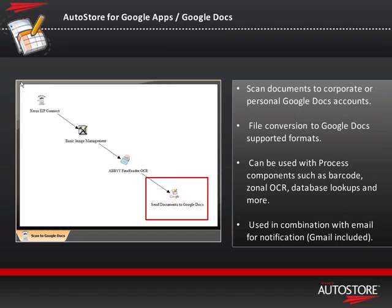A tour of the tool. Within the AutoStore Process Designer, the Send to Google Docs route component is available as an e-connector, so you can put it in either position within the workflow itself. This e-connector allows you to scan documents to corporate or personal Google Docs accounts and convert the information to Google Docs supported formats. It can be used in conjunction with barcode, zonal OCR, database lookups, and more.